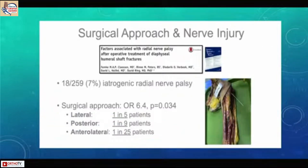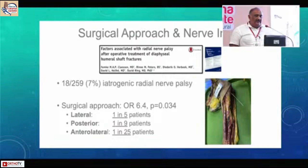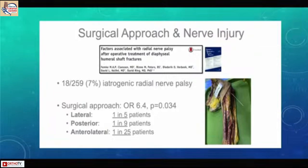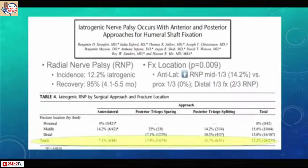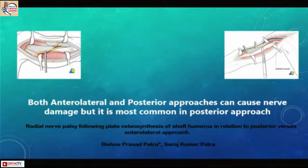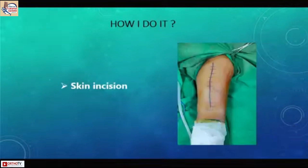A Florida study found only 9 patients with radial palsy in the posterior approach group but 25 patients in the anterolateral approach group. A New York study also found radial nerve palsy much less common in the anterolateral approach compared to both the triceps-sparing and posterior triceps-splitting approaches. Overall, both anterolateral and posterior approaches can cause nerve damage, but it is much more common in the posterior approach.